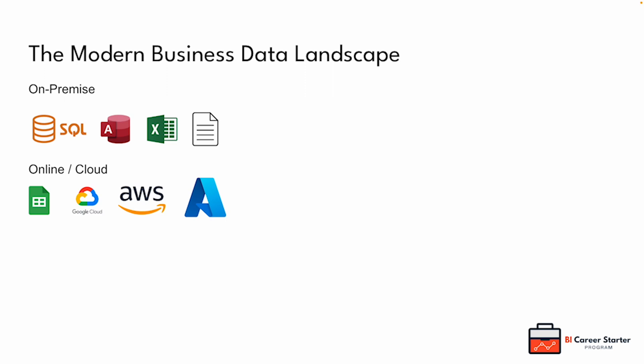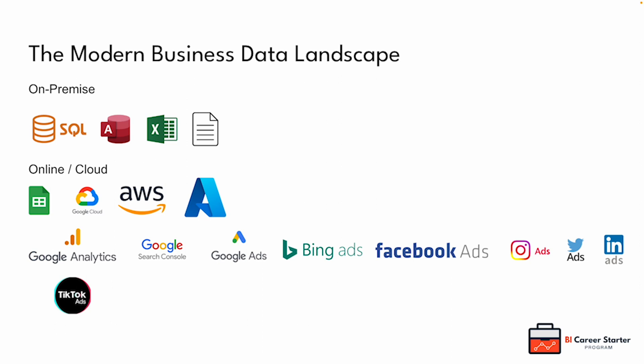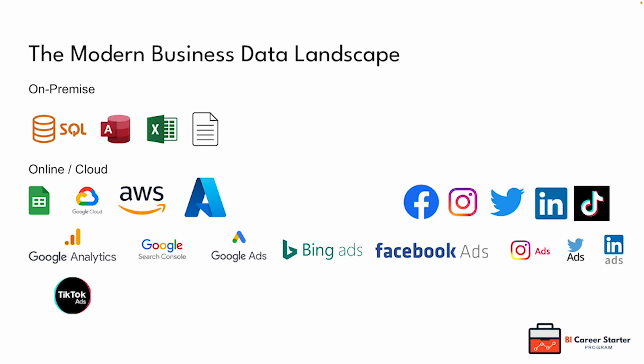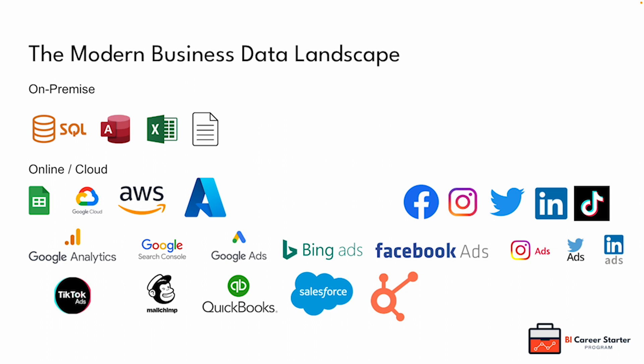More businesses started to build websites, giving rise to web traffic data in tools like Google Analytics. These websites need to be optimised for web searches, so you have search console data to analyse. Need to advertise online? You've got Google Ads, Bing Ads, Facebook Ads and loads of other platforms. You also need to have a presence on social media platforms and analyse your organic reach. Most businesses also use email marketing tools like MailChimp, accounting software like QuickBooks, and a CRM like Salesforce or HubSpot. If they sell stuff online, they might have something like Shopify, and you'll also need to use a payment gateway or two like PayPal and Stripe.